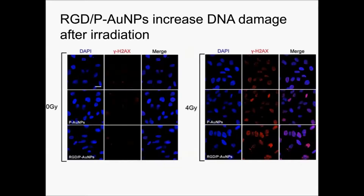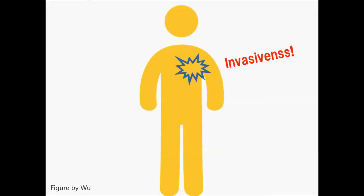To measure DNA damage, we stained the cells with the DNA damage marker gamma-H2AX. The gamma-H2AX signal increased in the RGD gold nanoparticle and radiation treatment group.